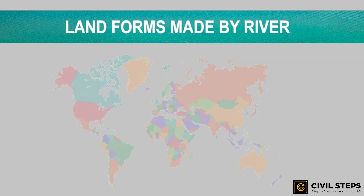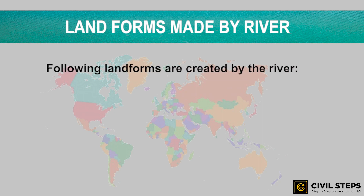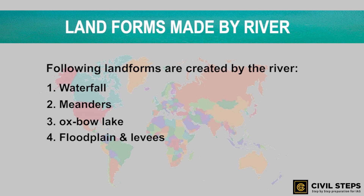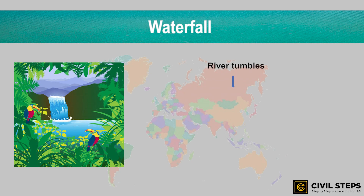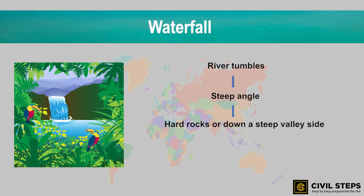Landforms made by the river include the waterfall, meanders, oxbow lake, flood plains and levees, distributaries, and delta. When the river tumbles at a steep angle over very hard rocks or down a steep valley side, it forms a waterfall.